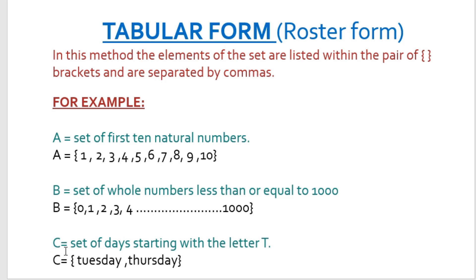Set C is a set of days starting with the letter T. When writing in tabular form, we actually write the names of the days starting with T, which are Tuesday and Thursday. These elements are written within curly brackets and separated by commas. When we write a set in tabular form, we list the elements within curly brackets and separate each element by a comma.